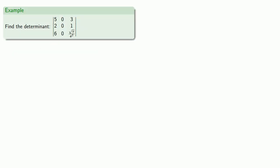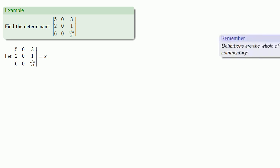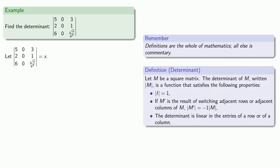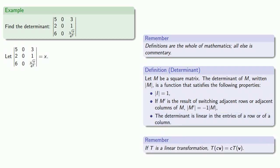Let's find the determinant of a matrix that has a column of zeros. Every problem in linear algebra begins with a system of linear equations, so let's let the determinant be the unknown we're looking for. Definitions are the whole of mathematics — all else is commentary. The definition of determinant says that the determinant is linear in the entries of a row or column. If t is a linear transformation, the transformation applied to a scalar multiple gives c times the transformation applied to the vector. It's important to recognize that linearity applies to the entries of a single row or column, so the scalar multiple should always be viewed as the scalar multiple of a single row or column.